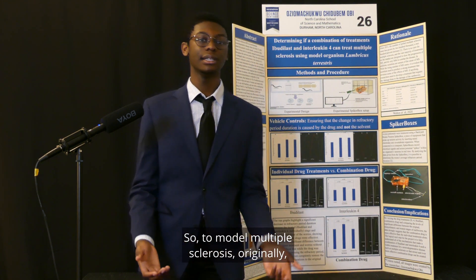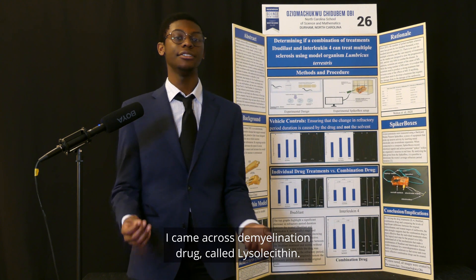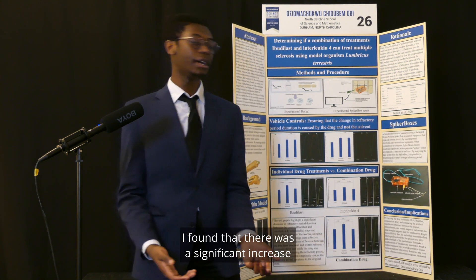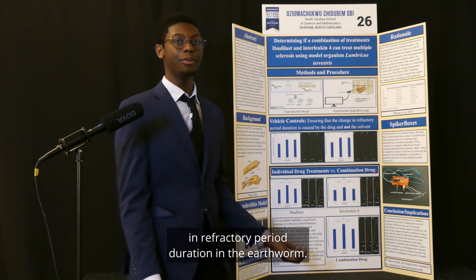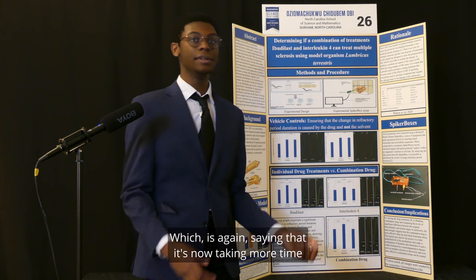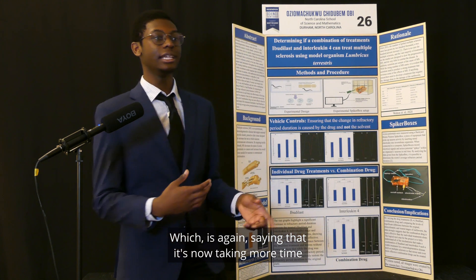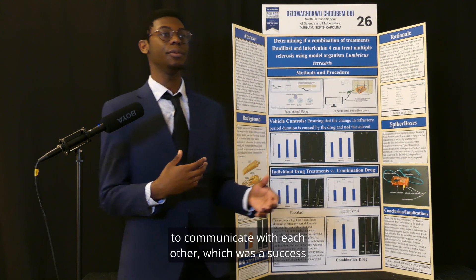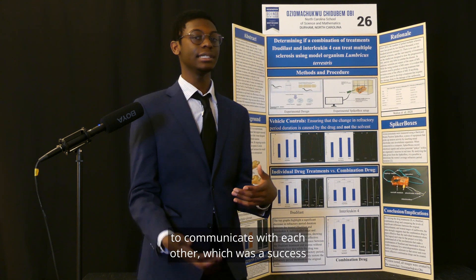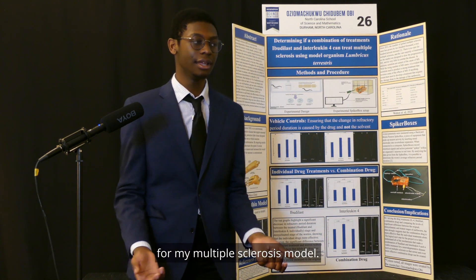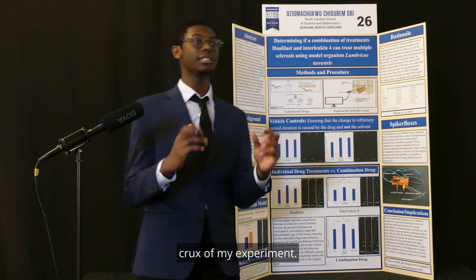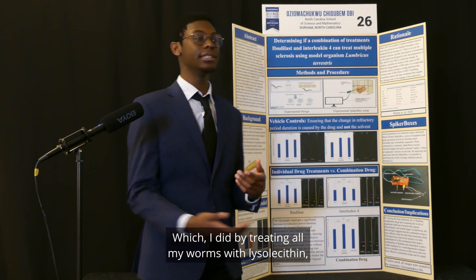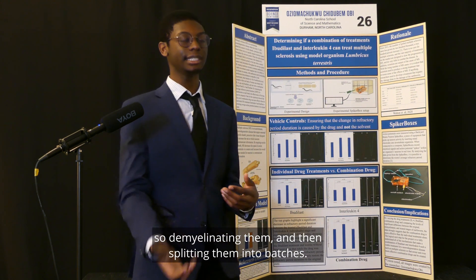To model multiple sclerosis, I came across a demyelination drug called lysolecithin. By applying it to earthworms, I found that there was a significant increase in refractory period duration, meaning it was now taking more time for the earthworm's nervous system to communicate with itself — a success for my multiple sclerosis model. This allowed me to move on to the crux of my experiment, treating all my worms with lysolecithin to demyelinate them, then splitting them into batches.